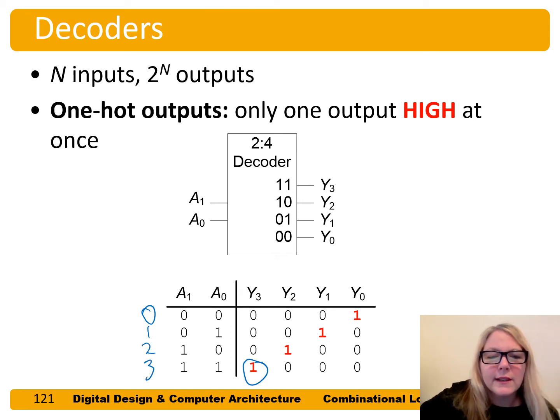So Y3 is true when the input combination is 3. Y2 is true when the input combination is 2. Y1 is true when the input combination is 1. And Y0 is true when the input combination is 0.